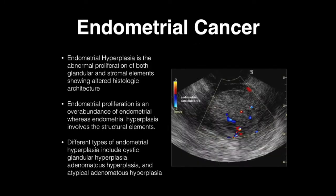The next topic is endometrial cancer. We'll start with endometrial hyperplasia, which is an abnormal proliferation of the glandular and stromal elements showing altering histological architecture. Endometrial proliferation is an overabundance of endometrial cells, whereas endometrial hyperplasia involves the structural elements.